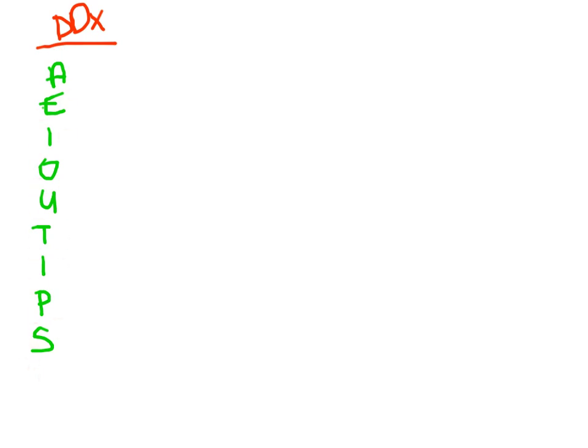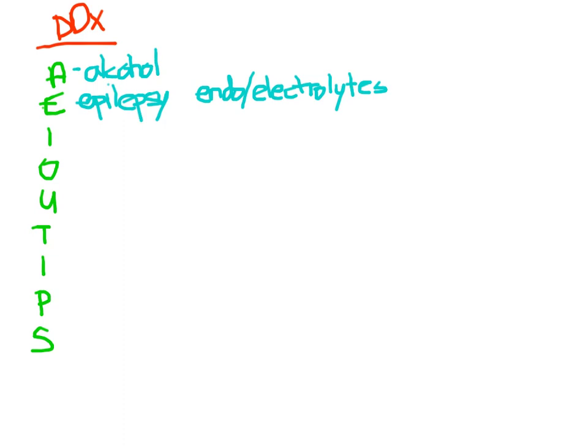The mnemonic is AEIOU TIPS. A stands for alcohol — maybe the patient is drunk or you want to send an alcohol level. E stands for epilepsy — perhaps they're post-ictal or having subclinical status epilepticus, meaning they're seizing without obvious outward convulsions. E also stands for endocrine and electrolytes — hyperthyroidism, hypothyroidism, thyroid storm where the defining feature is altered mental status, or electrolyte abnormalities like hyponatremia. E also stands for encephalopathy — maybe they have liver disease.